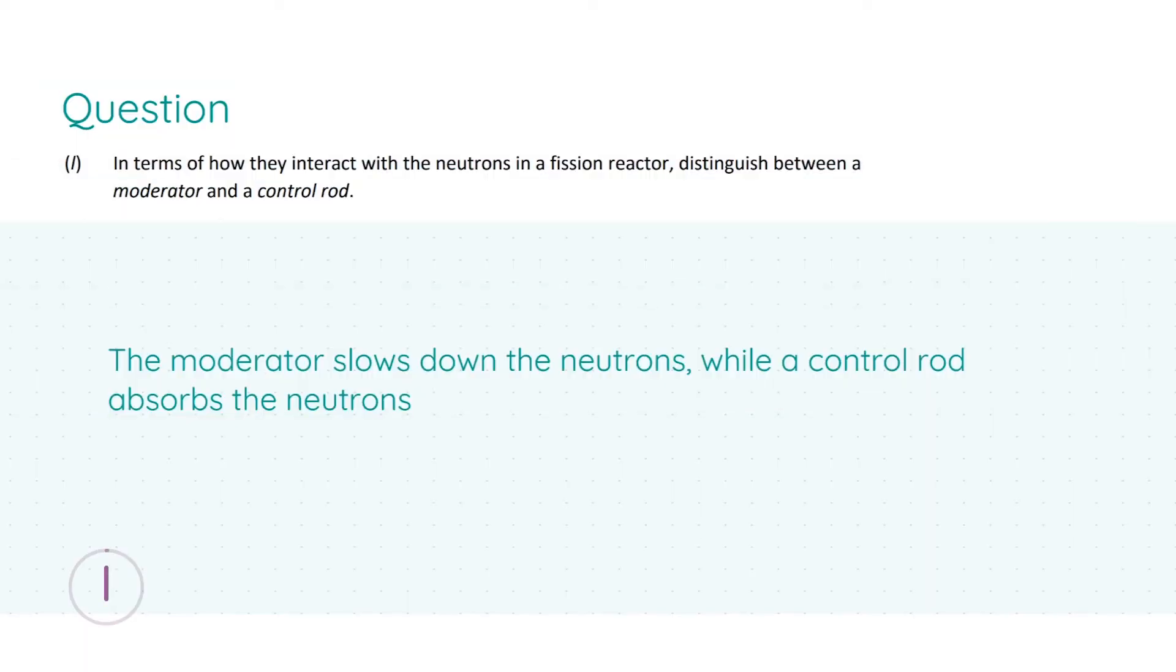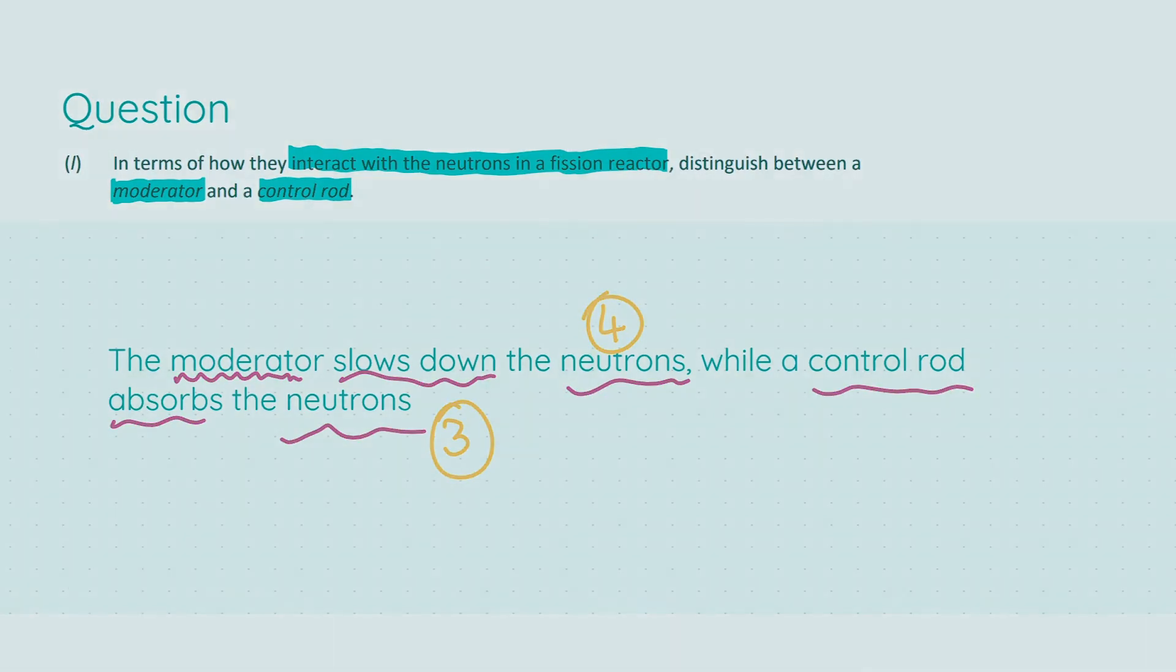Part L, our final part. We are asked to distinguish between a moderator and a control rod in terms of how they interact with the neutrons in a fission reactor. Very simple: the moderator slows down the neutrons and the control rod absorbs the neutrons. How a moderator interacts with the neutrons, stating it correctly, will get you four marks. How the control rod interacts with the neutrons will get you your final three marks.